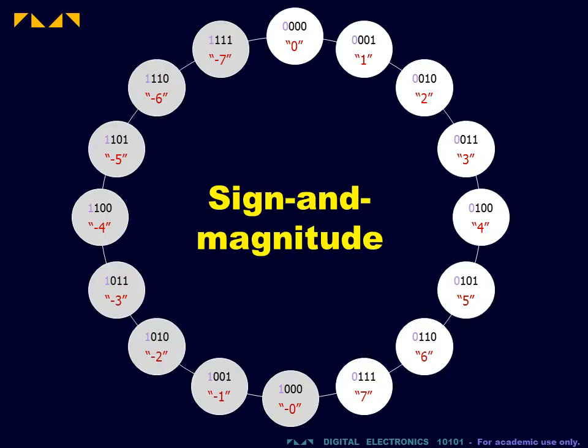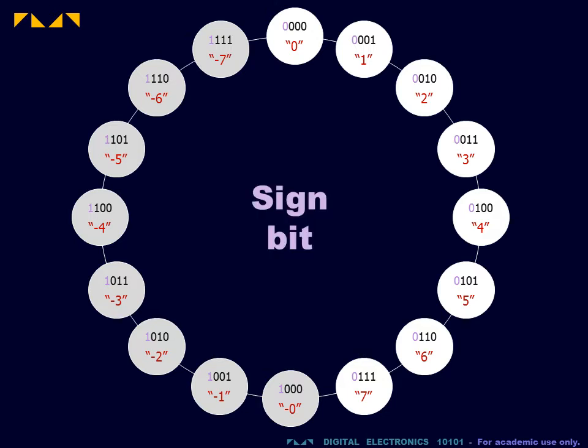One easy implementation of this is the sign and magnitude number representation. In this representation, the leftmost bit, called the sign bit, is reserved to indicate the sign of the number. Conventionally, the sign bit is 0 for positive numbers and 1 for negative numbers. The remaining bits are read as in the ordinary counting code.